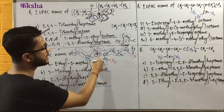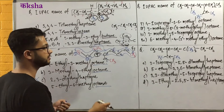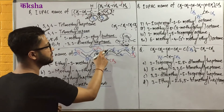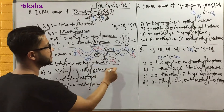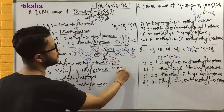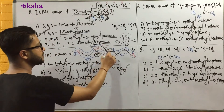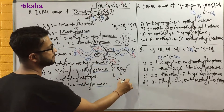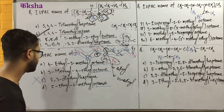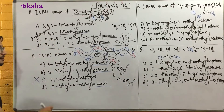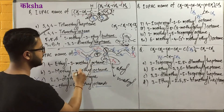Counting in 3, and counting in 3, and counting in 3, and counting in 3, and counting in 4 — what does this mean? This means that this is carbon and methyl, this is carbon and methyl. What is the answer? In 3, and in 4.